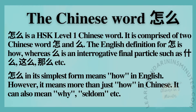怎么 is a HSK Level 1 Chinese word. It is comprised of two Chinese words 整 and 么. The English definition for 整 relates to 好, whereas 么 is an interrogative final particle such as 什么, 这么, 那么, etc.